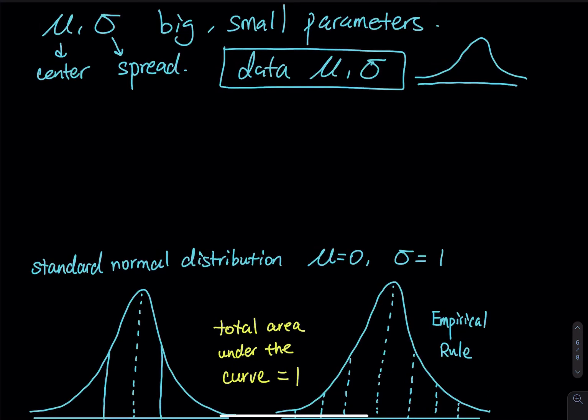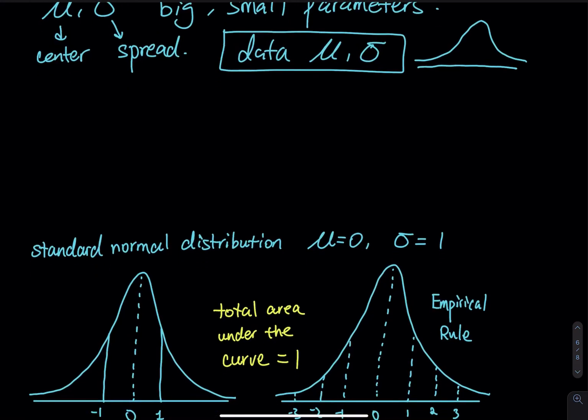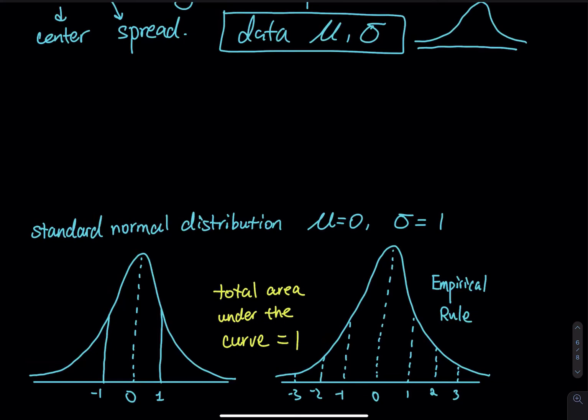So let's say you have 10 different data, then you have 10 different mu, 10 different sigma, and 10 different curves. I want to fix the shape. I don't want the center shift left and right. I don't want the spread changes all the time. I want to fix them. So to fix them, then we have standard normal distribution.